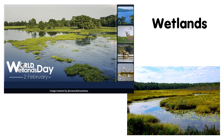Some examples of wetlands are mangrove swamps, lakes, rivers, rice fields, etc. They are homes to many types of animals and plants. These animals and plants provide us with food and medicines.